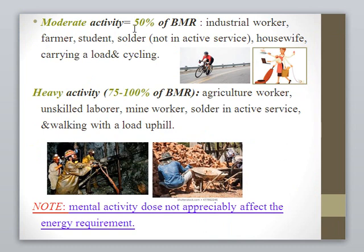Moderate activity requires 50% of BMR — examples include industrial workers, farmers, students, soldiers not in active service, housewives, carrying a load, and cycling. Heavy activity equals 75 to 100% of BMR — examples include agriculture workers, unskilled laborers, mine workers, soldiers in active service, and walking uphill with a load. Note that mental activity does not appreciably affect energy requirement.